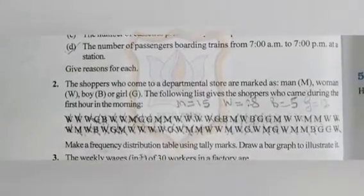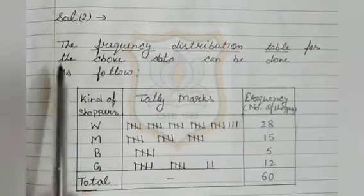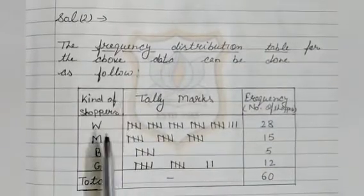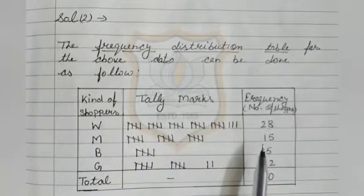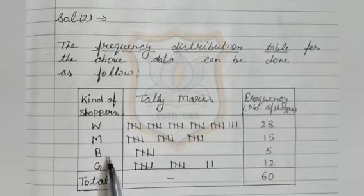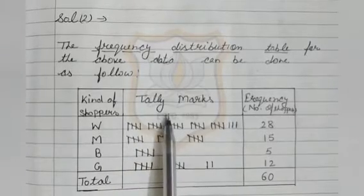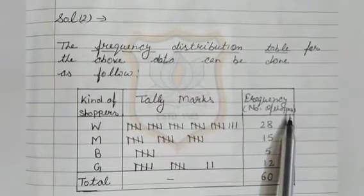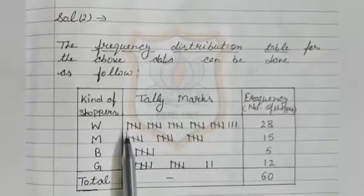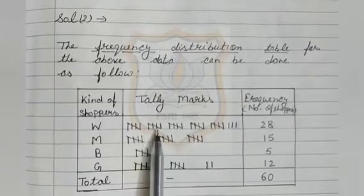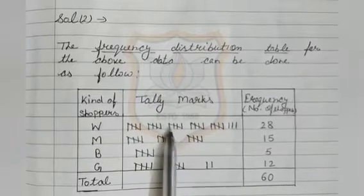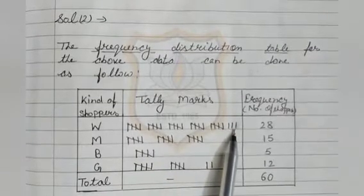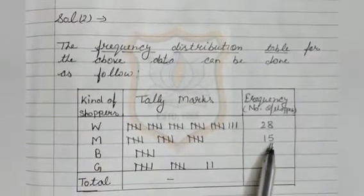Students, look at the solution. The frequency distribution table for the above data can be done as follows. Here we have made a frequency distribution table with kinds of shoppers — women, men, boys, and girls. In one column there are tally marks, and in another column there is frequency, meaning the number of shoppers. Women is 28, so we mark 28 tally marks.